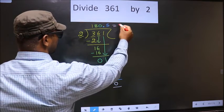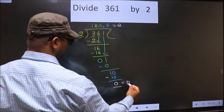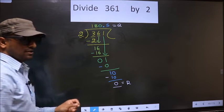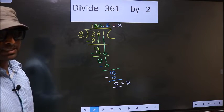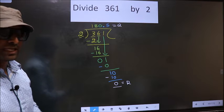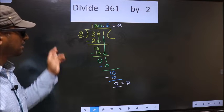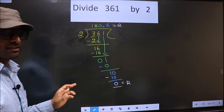So this is our quotient and this is our remainder. Did you understand where the mistake happens? You should not do that mistake. Am I clear?